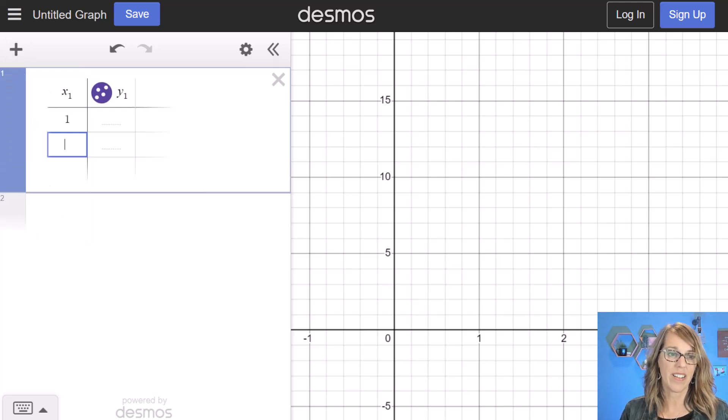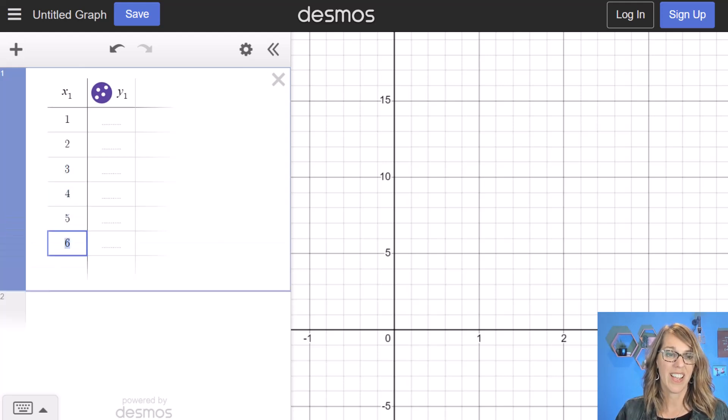I'm going to go ahead and just do one, two, then it starts to guess. I can just enter. I'm going to go through six there. And then I'll put some points here. 11, 13, 14, 15, 19, and we'll say 22.